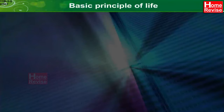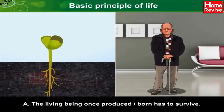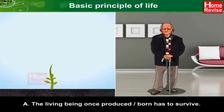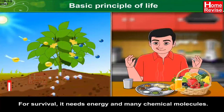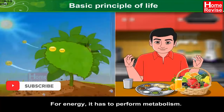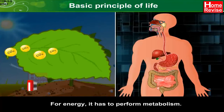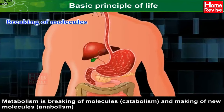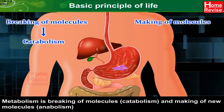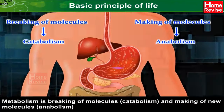Basic Principle of Life A: The living being, once produced or born, has to survive. For survival, it needs energy and many chemical molecules. For energy, it has to perform metabolism. Metabolism is breaking of molecules, i.e. catabolism, and making of new molecules, i.e. anabolism.